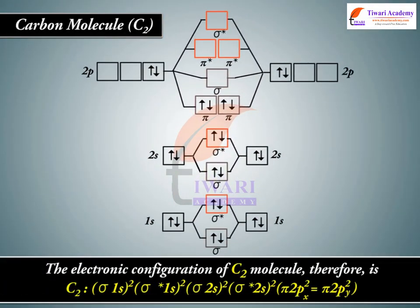The electronic configuration of C2 molecule therefore is C2: sigma 1s2, sigma asterisk 1s2, sigma 2s2, sigma asterisk 2s2, pi 2px2 equals pi 2py2.